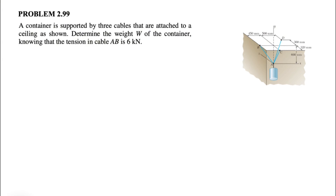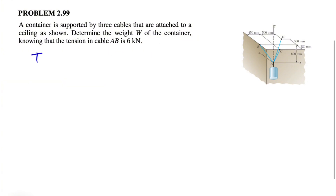Let's see how we can solve question 99 from the second chapter of the Brin-Johnson textbook. We have a container supported by three cables attached to a ceiling, and we need to determine the weight of the container knowing that the tension in cable AB is 6 kilonewtons. So the given is TAB, the magnitude of the tension in cable AB, is 6 kilonewtons, and we have to figure out the weight.